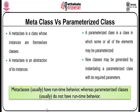Meta class versus parameterized class. A meta class is a class whose instances are themselves classes — it is an abstraction of its instances. A parameterized class is a class in which some or all of the elements may be parameterized, and new classes may be generated by instantiating a parameterized class with its required parameters. Meta classes usually have run-time behavior, whereas parameterized classes usually do not.